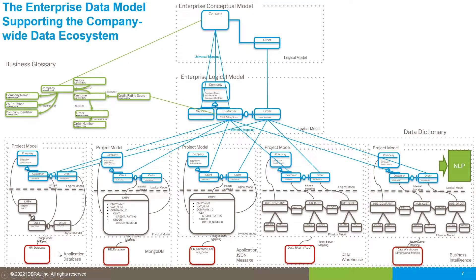There can be many different types of data assets: traditional relational databases for applications, newer hierarchical structures (with MongoDB and JSON support added in 19.2), data warehouses, and BI reports — all tied together through an enterprise logical data model and business glossary. This gives us an enterprise data model where we can successfully govern and manage the organization's data.